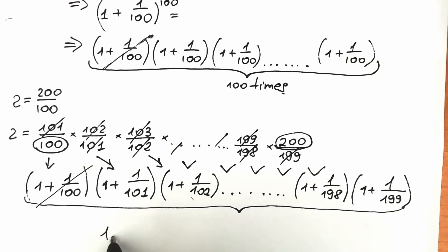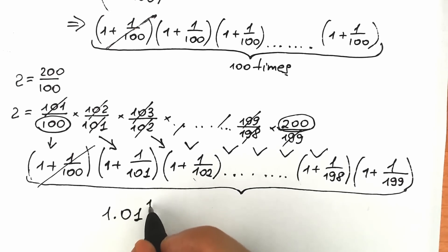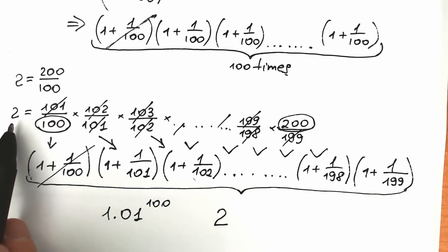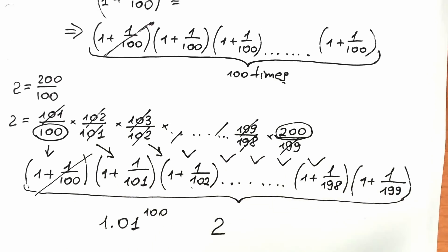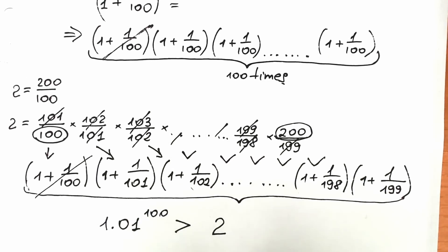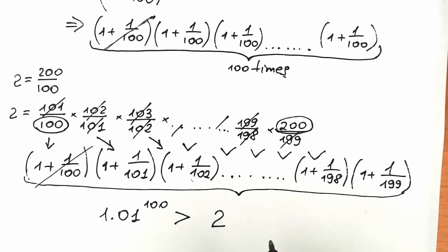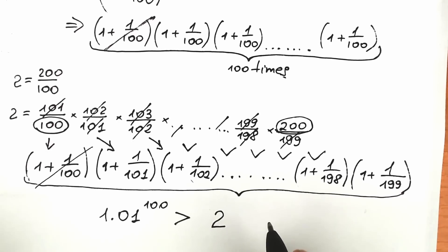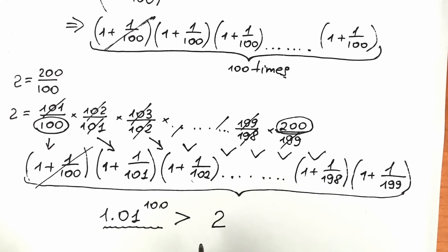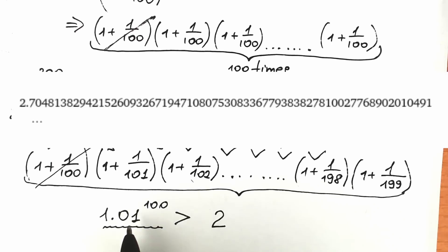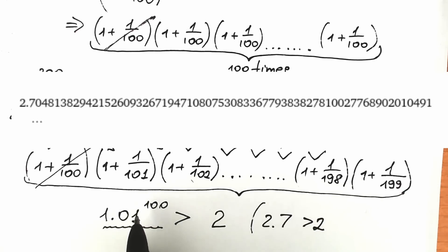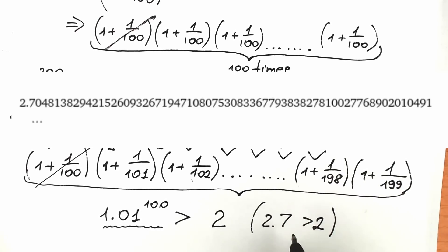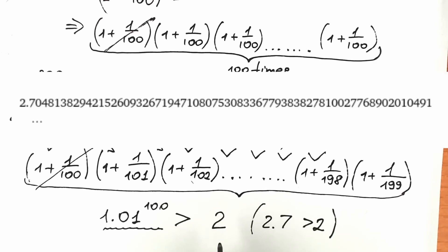Let's write our final answer: 1.01 to the power 100 is greater than 2. And I was curious before recording this video — I wanted to check the actual value. It turns out 1.01 to the power 100 is approximately equal to 2.7, which is indeed greater than 2. So you can also see this numerical confirmation on the screen.